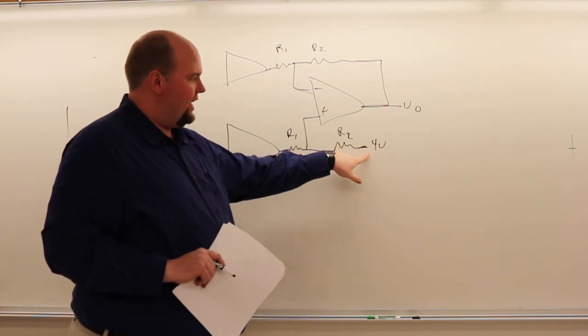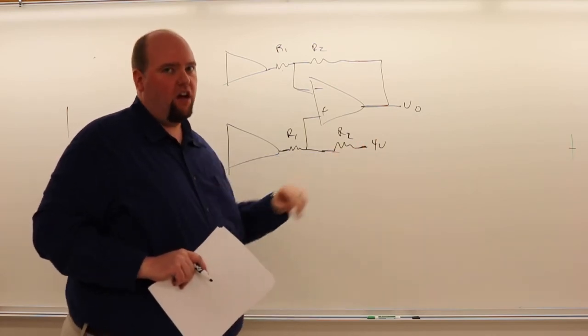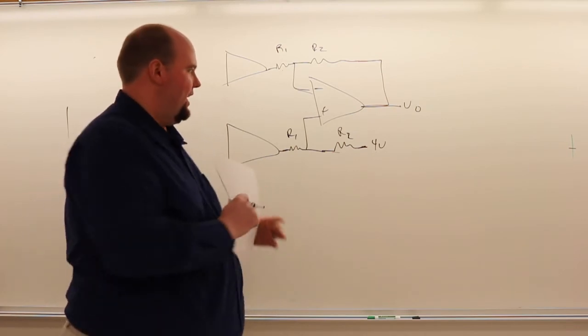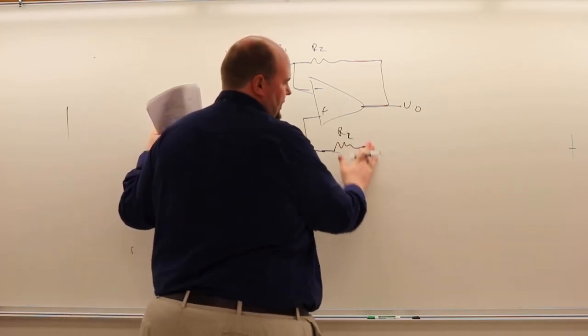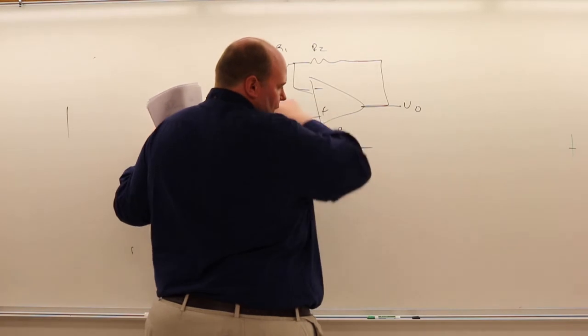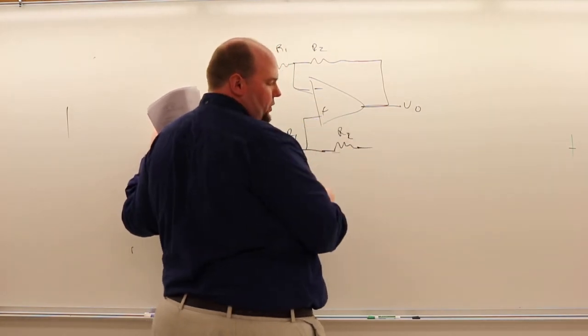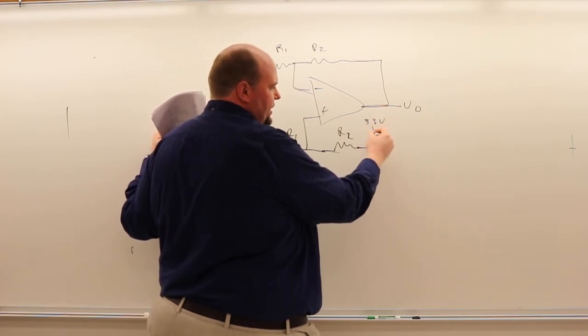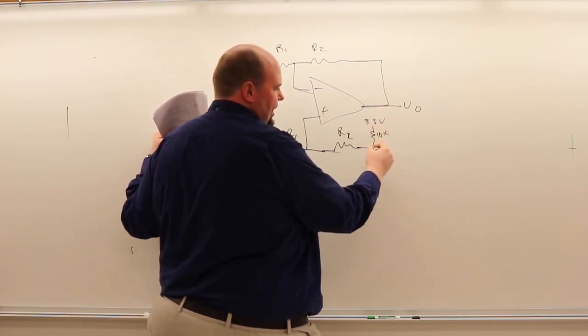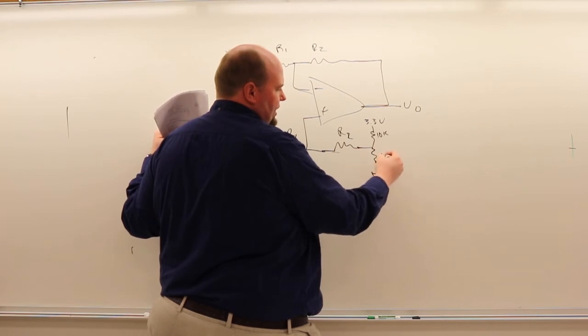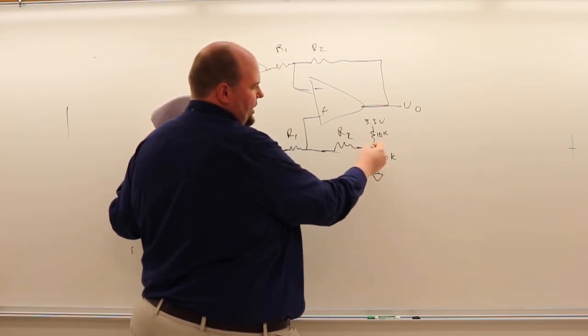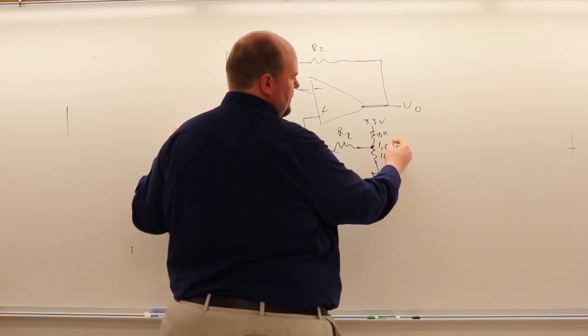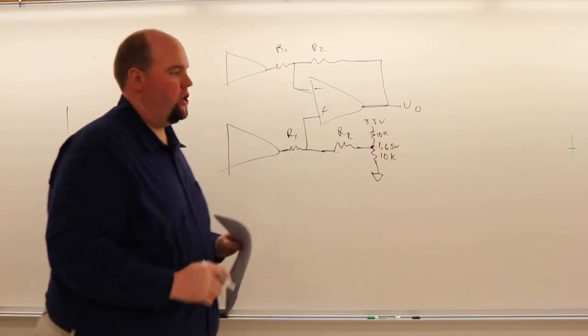One caveat about adding offsets here though, this offset, we can't just create this offset voltage using a voltage divider. A lot of times it's tempting to say, okay, I want a 1.65 volt offset here. So we say, I'm going to take my 3.3 volt reference, and I'm going to do a 10k and a 10k, and I'm going to say, okay, now I got 1.65 volts here. No.